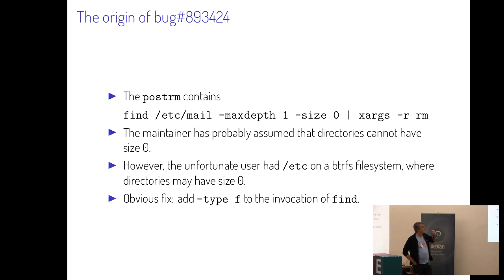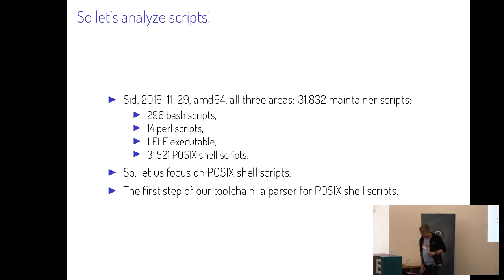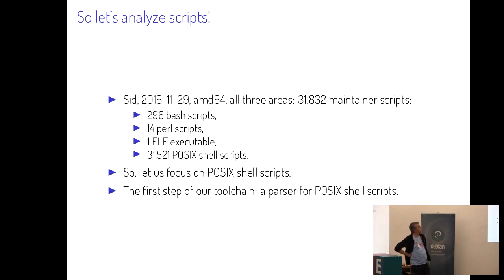The point is that testing is not enough. PioParts tried to install and de-install the package, but the bug was not found because it occurs only in a very particular situation. We are trying to analyze the maintainer scripts. In an analysis from the end of 2016, we had almost 32,000 maintainer scripts in the archive with more than 50,000 binary packages. The vast majority are POSIX shell scripts, about 300 bash scripts, a few Perl scripts, and even one ELF executable.